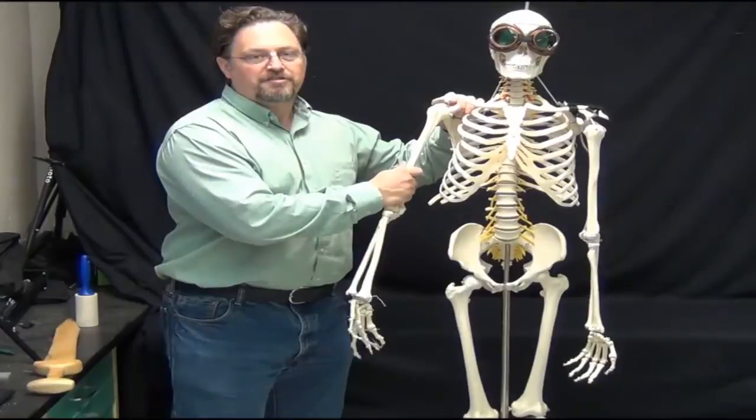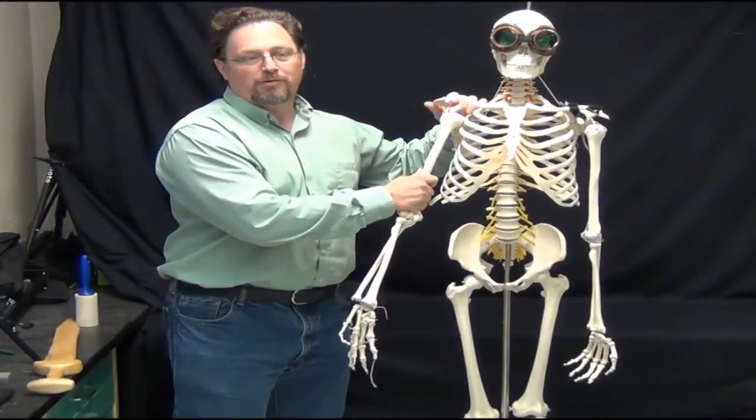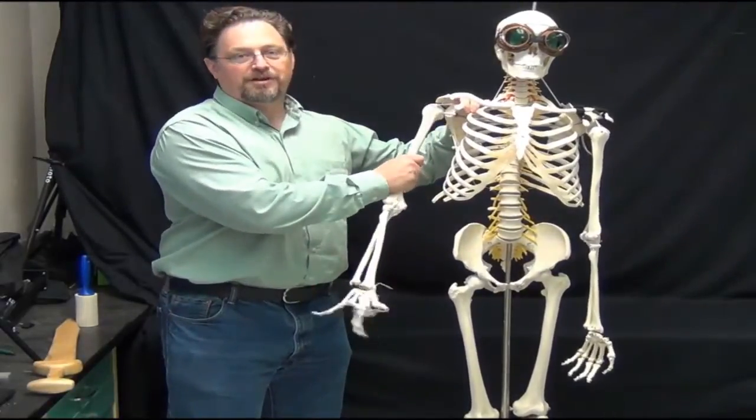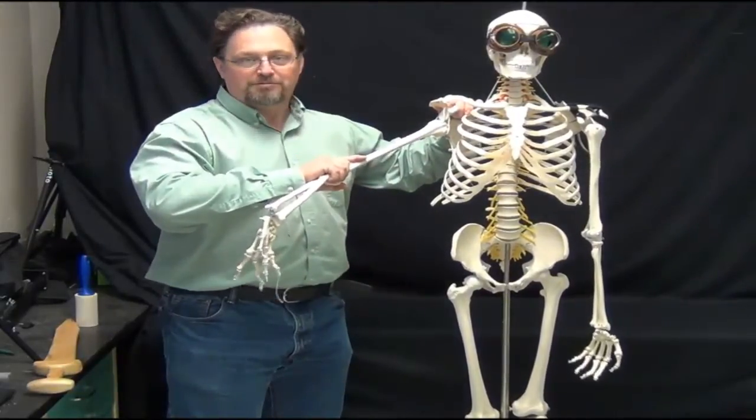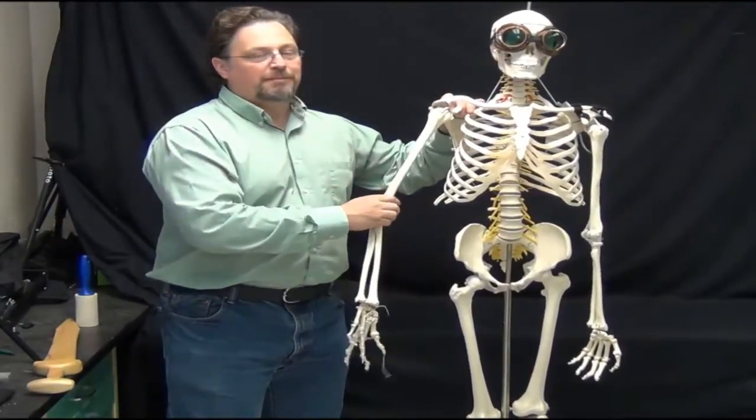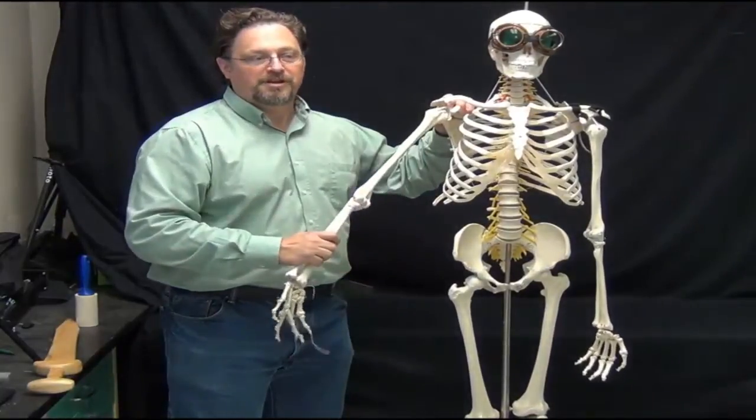So there's three major types of shoulder dislocation. The anterior dislocation, where the humeral head comes out forward or anteriorly. Posterior dislocation, which is the opposite. And inferior dislocation, where it moves inferiorly. We're going to start talking about the anterior dislocation first.